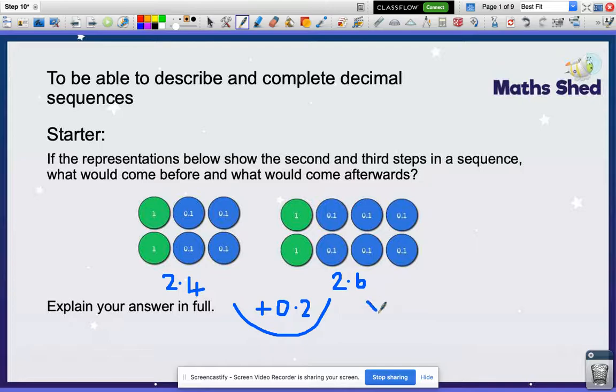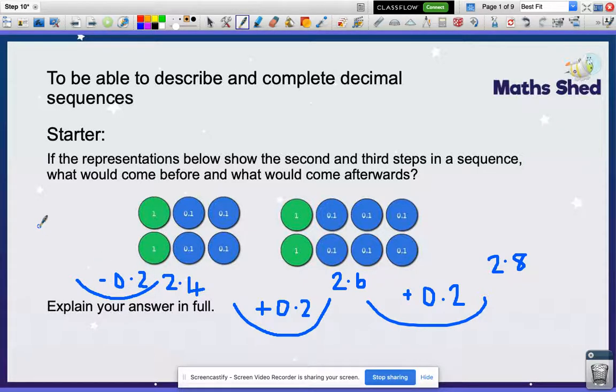So my next one, if I was going to add on another 2 tenths to complete this sequence, I would have a representation showing 2.8. And it asks what comes before. So therefore, we have to think what would come here? We're going to work backwards, and instead of adding on 0.2, we're going to take away 2 tenths, and we would have 2.2.